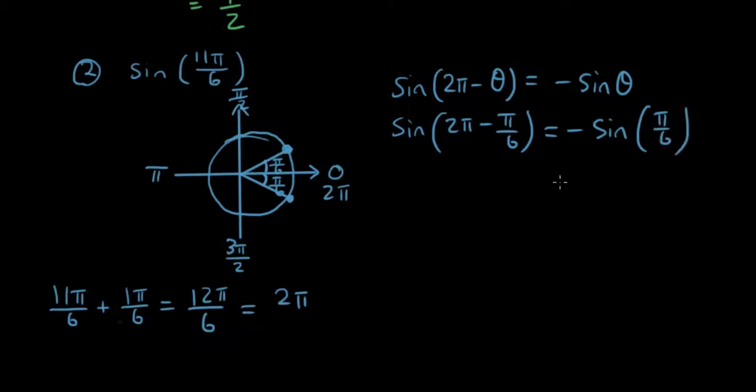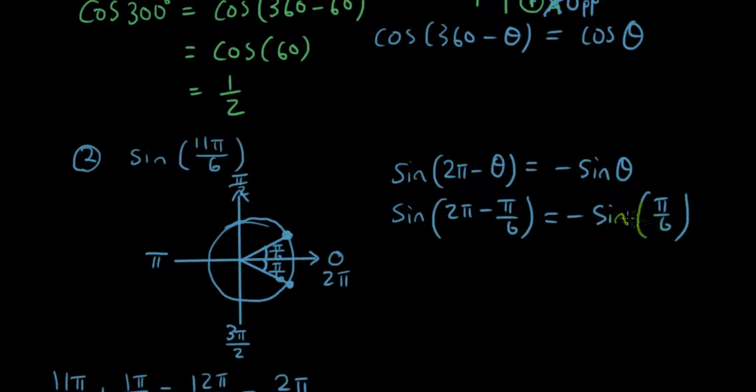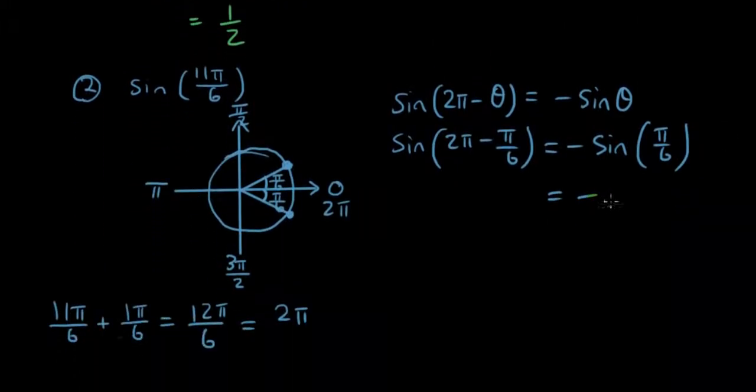So pi over 6 is 180 degrees divided by 6, which is 30 degrees. So we can use this same triangle. Because if we have 30 degrees as theta, then this is the opposite side and this is the hypotenuse side. This becomes the opposite and this becomes the hypotenuse. So therefore negative sine 30 degrees is negative opposite over hypotenuse. So that's 1 over 2. Negative 1 over 2. And that is the answer for sine of 11 pi over 6 is negative 1 over 2.